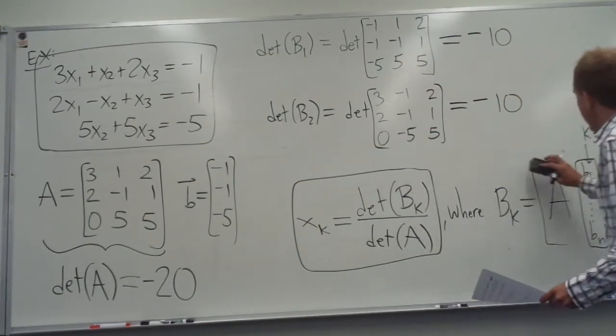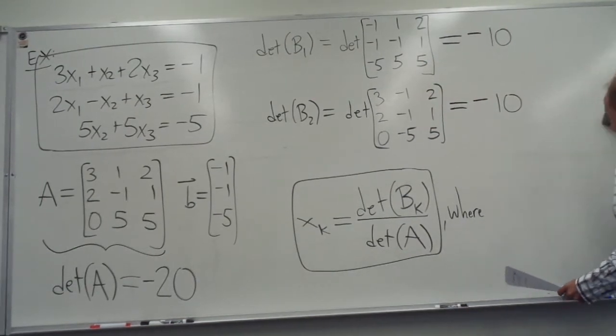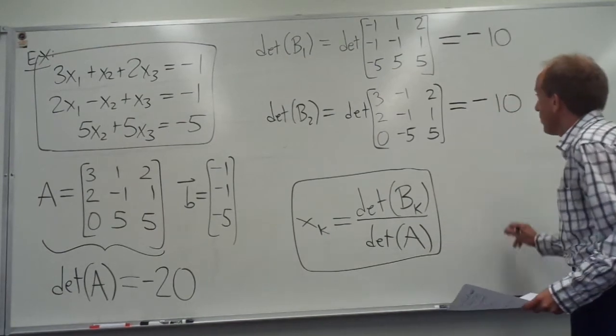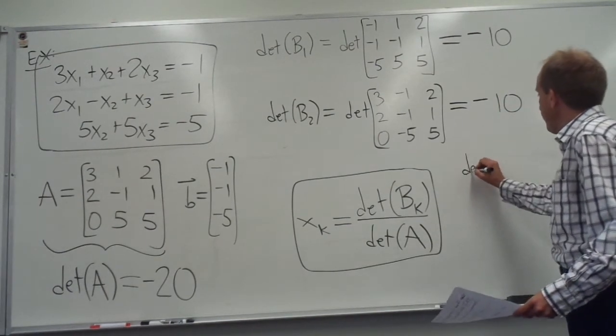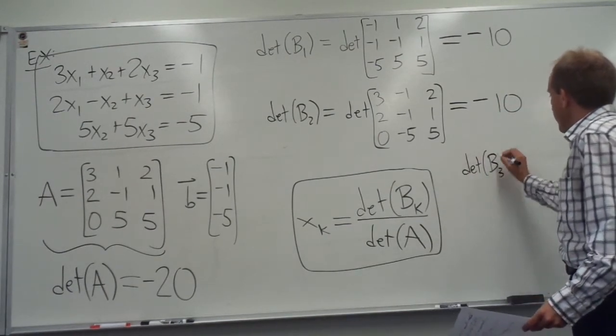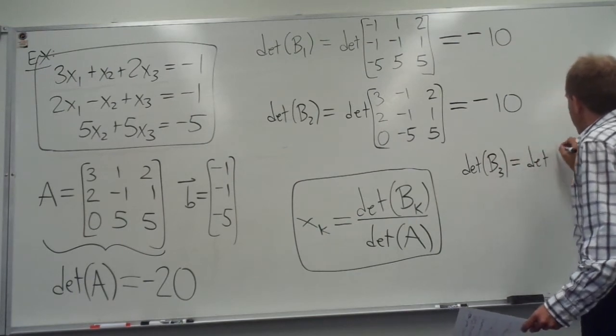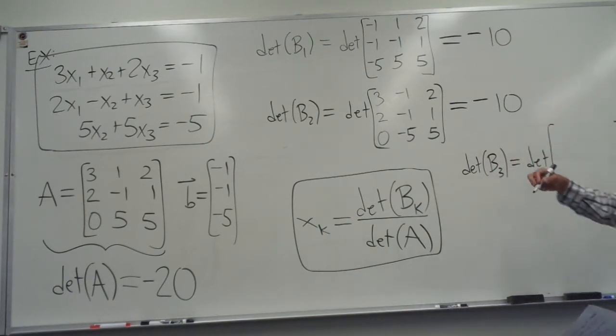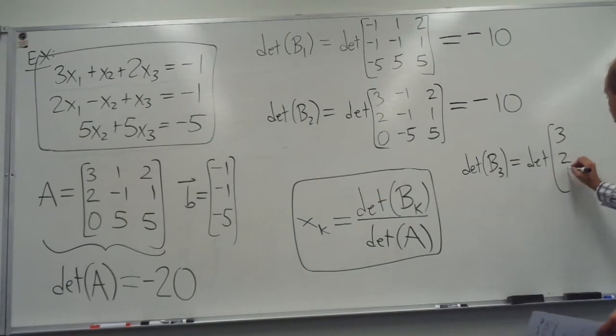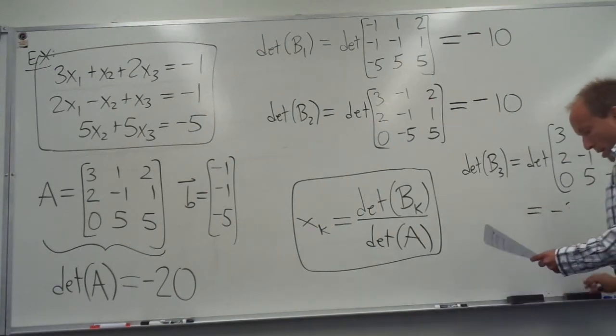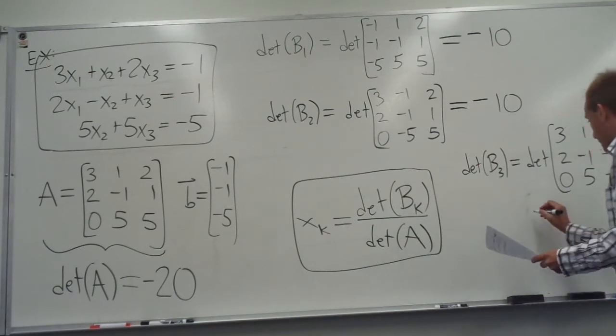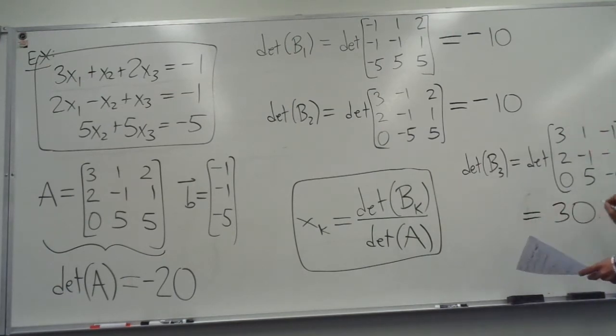Okay, so that's that. And then finally, for the B3, the B3 matrix, all I have to do now is I leave the first two columns of A, as they were, and now it's the third column that I replace with B. And I'm just going to tell you that the answer that you get here is 30. I'll let you guys check that.